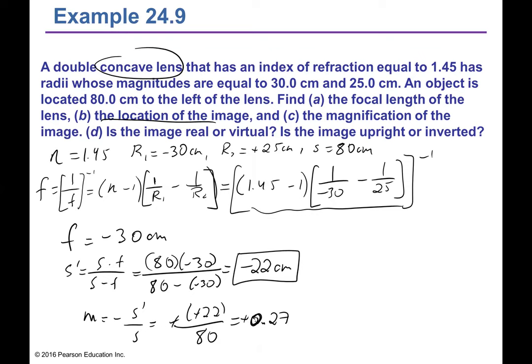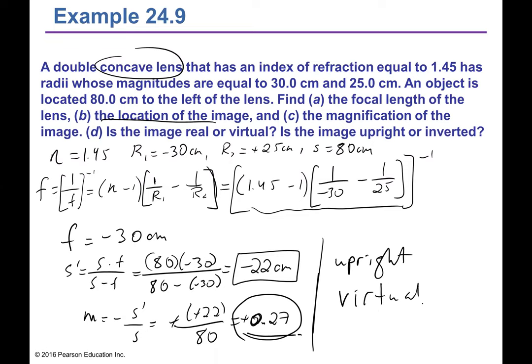With focal length F equals negative 30 cm and S equals 80 cm, image distance S prime equals S times F over (S minus F) equals 80 times negative 30 over (80 minus negative 30) equals negative 22 cm. Magnification equals negative S prime over S equals positive 0.27 — upright and smaller. The image is virtual because S prime is negative and magnification is positive.